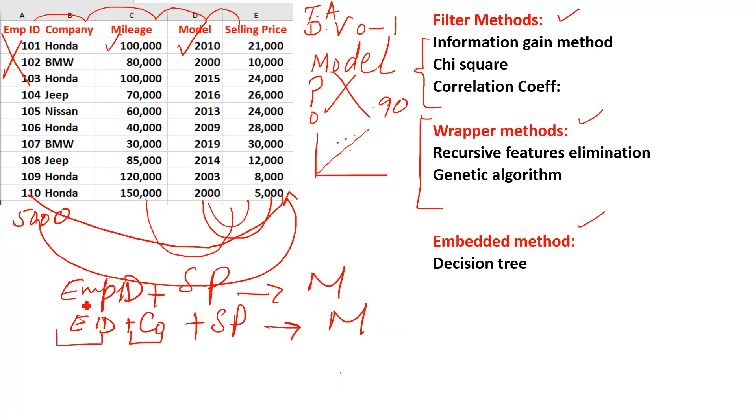Third time I say employee ID, company, and mileage—when I add the selling price and give this to our training data set, again we will get some kind of model. Next time maybe employee ID, model, and mileage. So you can make different subsets of all these features, add with the target attribute, give to the training set, and every time we will receive some model.